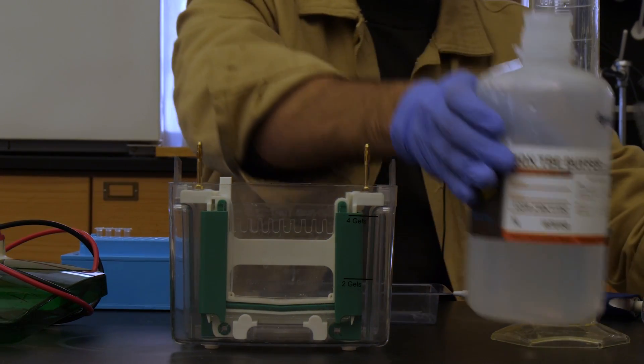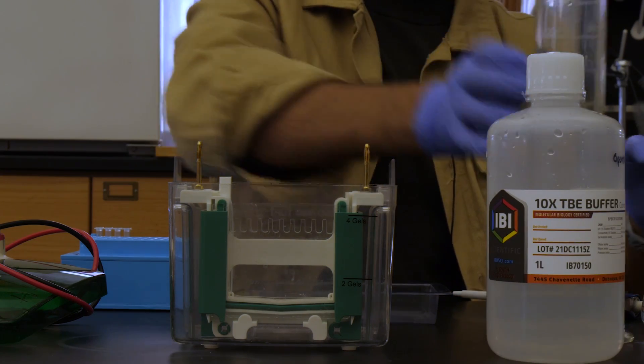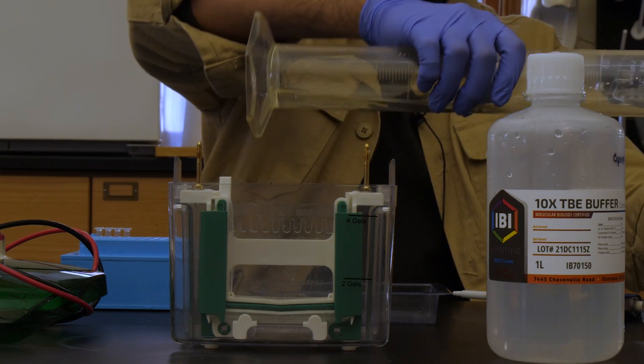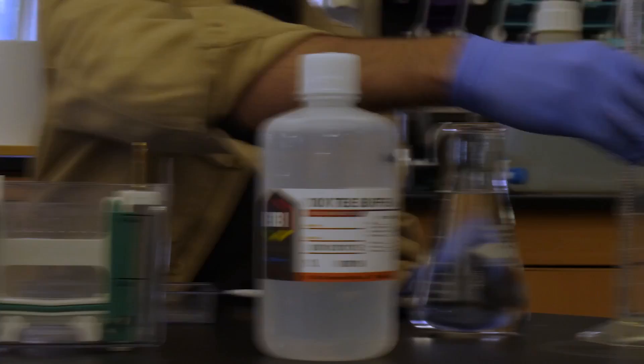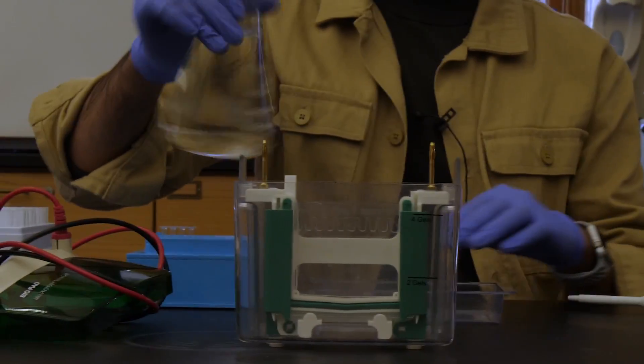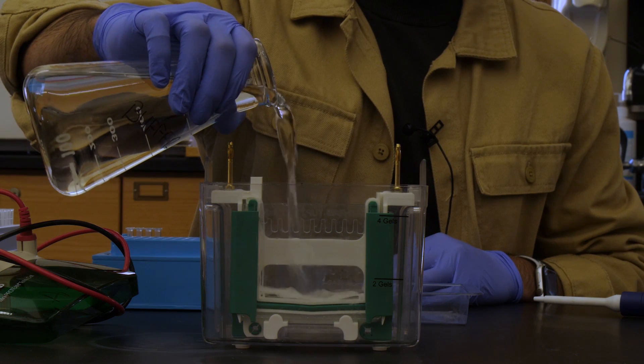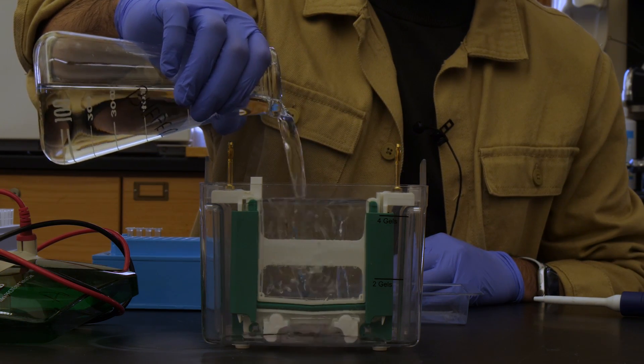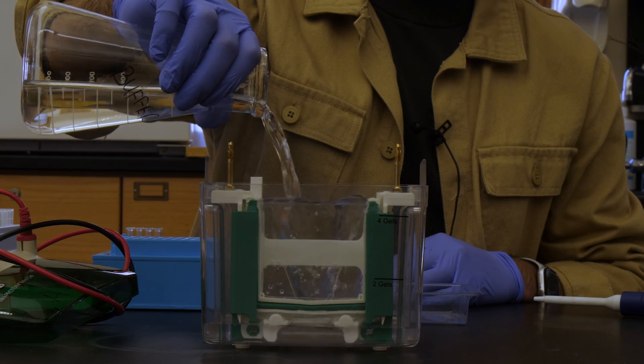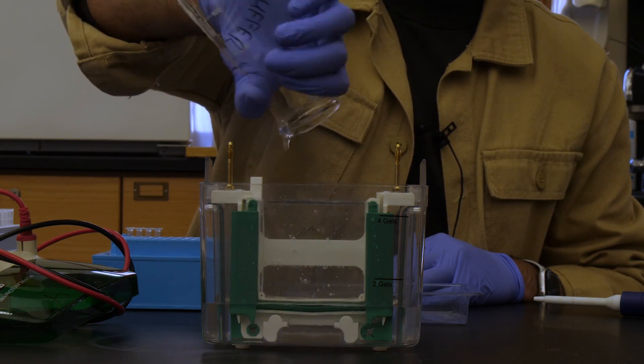Our buffers are TBE-based and we run our gels at a 0.5x concentration. So just adding our TBE to our water. This is the buffer we'll be utilizing, and you will simply pour it into the gel dam apparatus and let everything else overflow, making sure the bottom of your gel is submerged into the buffer.